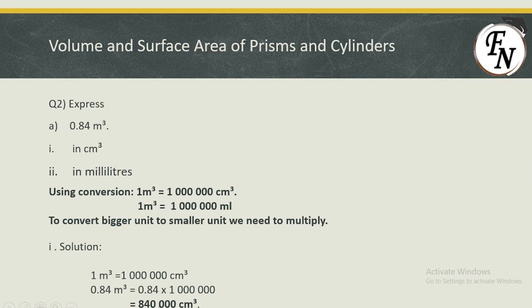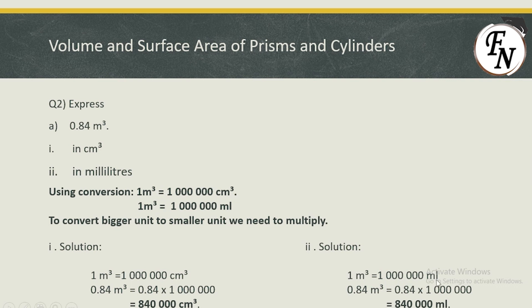This 840,000 centimeter cube would also be equal to 840,000 milliliters, because centimeter cube and milliliters are equal. To confirm, 1 meter cube equals 1,000,000 milliliters, and 0.84 multiplied by that conversion unit again gives exactly the same number as the centimeter cube answer, since we were converting the same value.